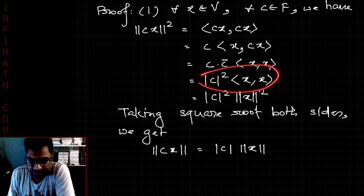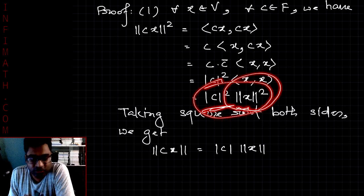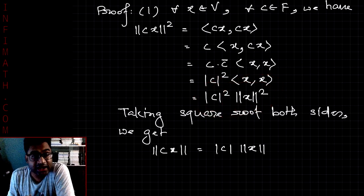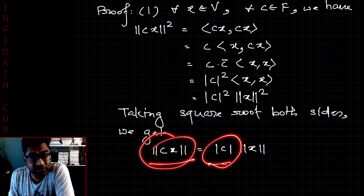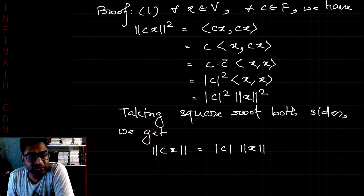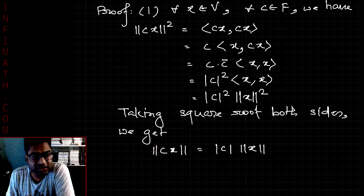Therefore, the norm of cx squared equals |c|² times the norm of x squared. Taking the square root on both sides, we get norm of cx equals |c| times norm of x. In this way we have proved the first property.